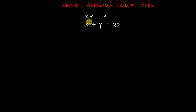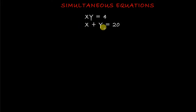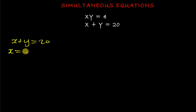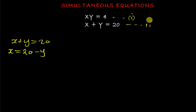We have xy = 4 and x + y = 20. One of the most important things here is that you have to work with the linear equation — you make one of the variables the subject of the formula. So from x + y = 20, we make x the subject: x = 20 − y. Call this the substitute value.